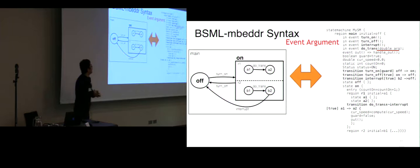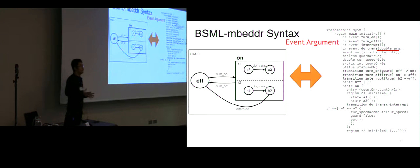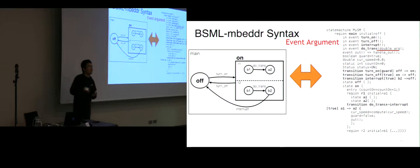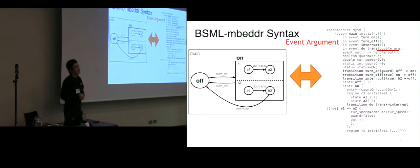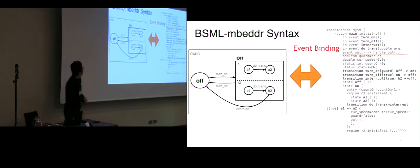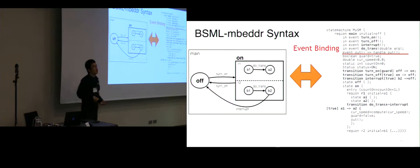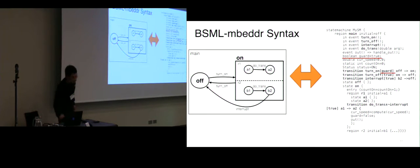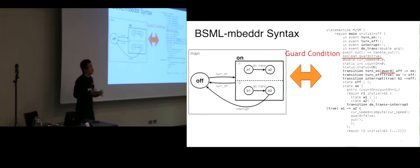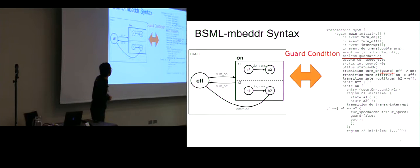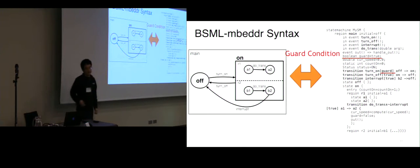Here are some language features. First, event arguments: when we declare an event, it can be declared with an argument whose type is a normal C type — either a simple C type like Boolean, long, or integer, or a user-defined C type. Event binding: the event can be bound to C functions, so that when the event is generated, the function is also going to be called. Guard conditions: any transition can have a Boolean value as a guard condition, so the transition is enabled only when the condition is true. In this example, we defined a Boolean variable and used it as a guard condition of one of the transitions.